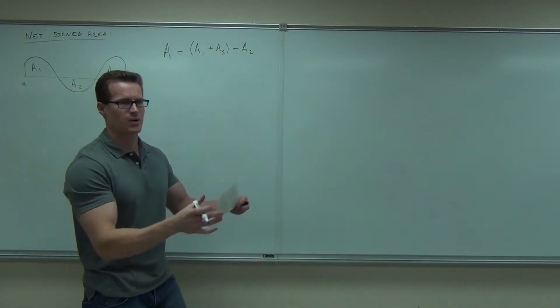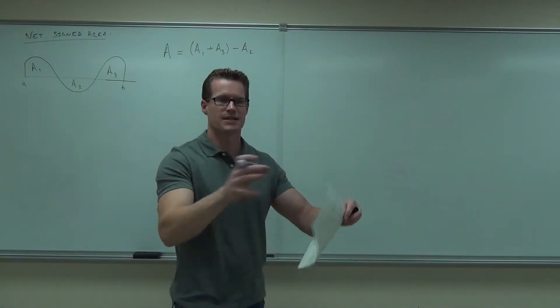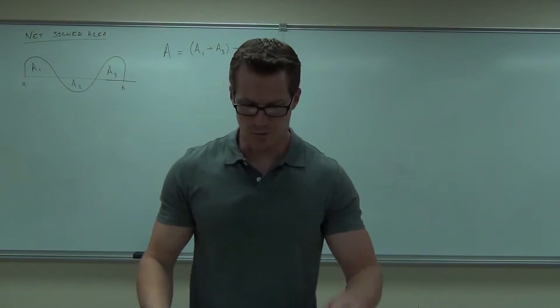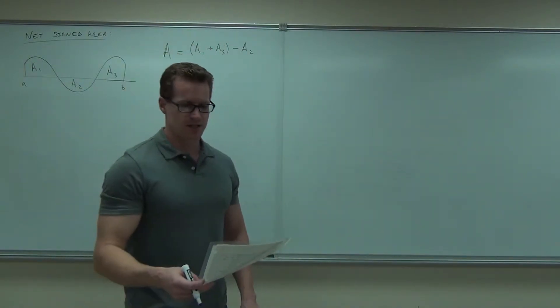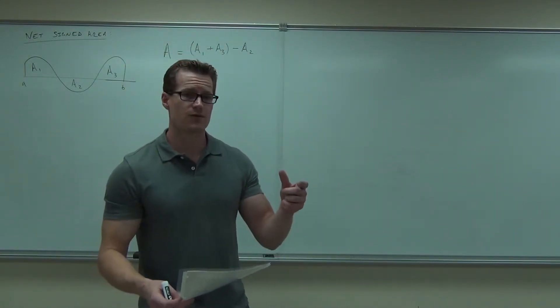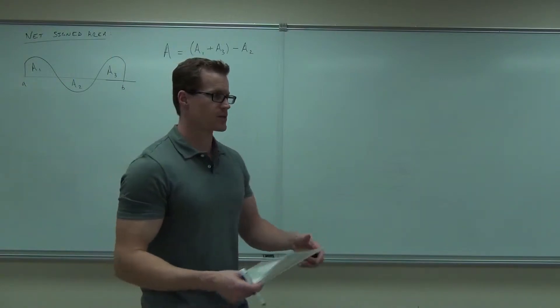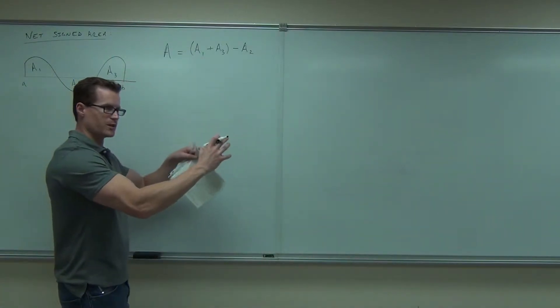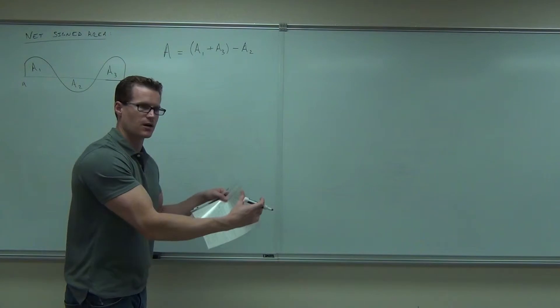It's saying the total area is the positive areas minus the negative area. Or the area above the x-axis and taking away the area below the x-axis. That's what that actually means. It's basically the difference between the areas above and below the x-axis.